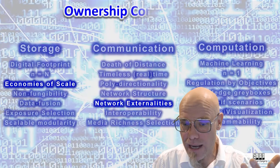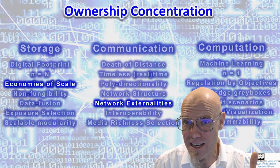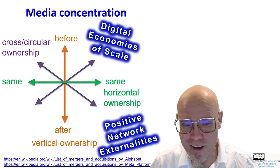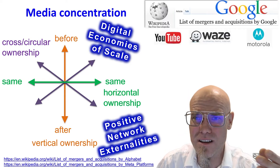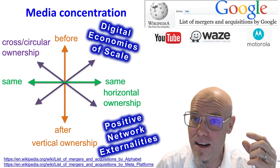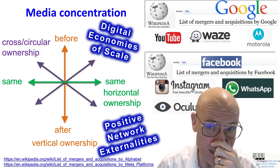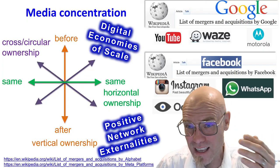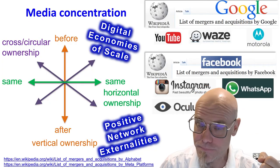Once we have these building blocks, we're going to create innovations with them. We'll first see what happened already when you combine them independently. For example, if you just take economies of scale and network externalities, you get these amazingly big monopolies — or oligopolies — with a large concentration of ownership. We need to understand that this came about not because of greed, but because that's how the digital age is structured.